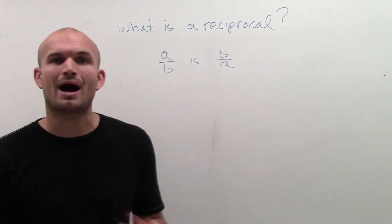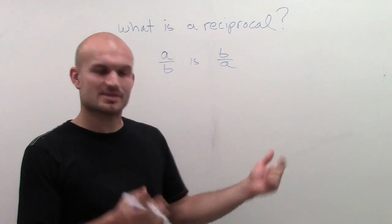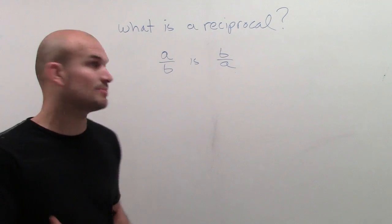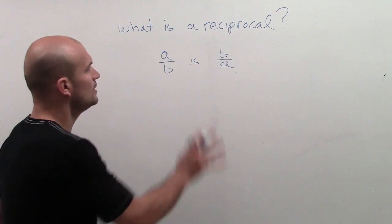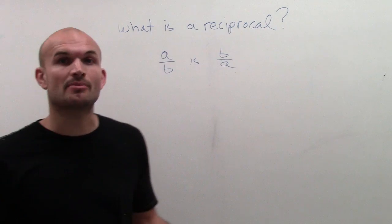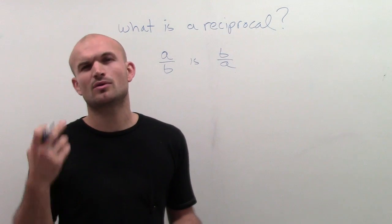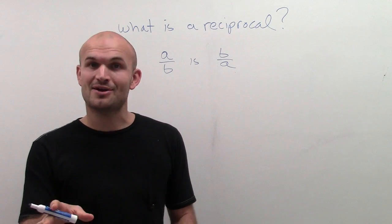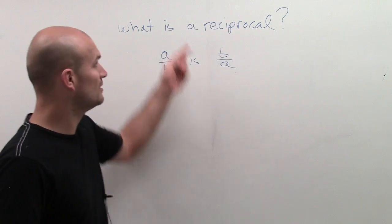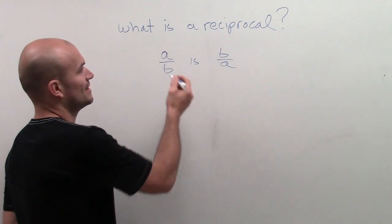But why is it true? Why is that the reciprocal? And how can we find the reciprocal if it's not in a fraction? Well, first of all, the reciprocal of a number is its multiplicative inverse. If you didn't already watch what multiplicative inverses were, make sure you go and watch that. But I'll quickly explain it right here anyways.